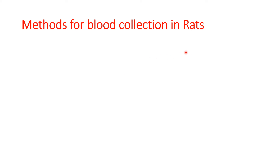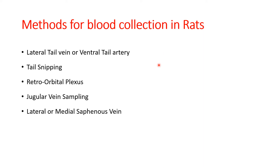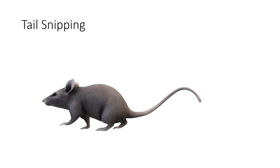The methods of blood collection in rats include the lateral tail vein or ventral tail artery, tail snipping, retroorbital plexus, jugular vein sampling, lateral or medial saphenous vein, dorsal metatarsal vein, and cardiac puncture. Tail snipping involves cutting a small portion of the tail to collect blood, but this method should only be used in extreme conditions as improper performance can damage the tail.